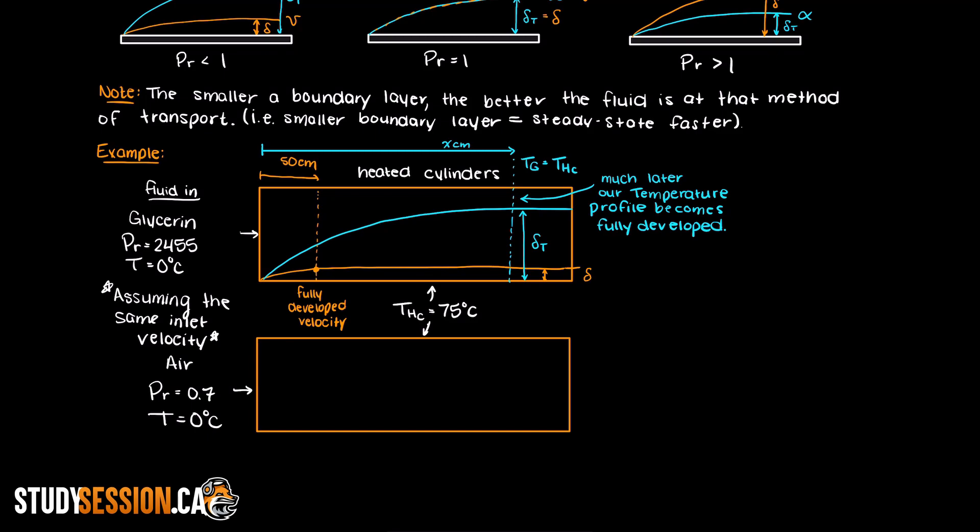Now looking at our second example, what do you think is going to happen? Well now since we have the Prandtl number less than 1, our temperature profile will actually develop quicker than our velocity profile. So the temperature of our fluid will become approximately uniform before our fluid velocity profile fully develops.